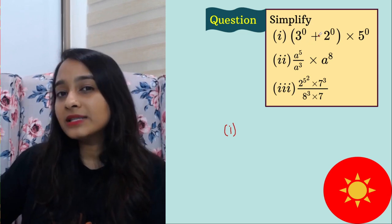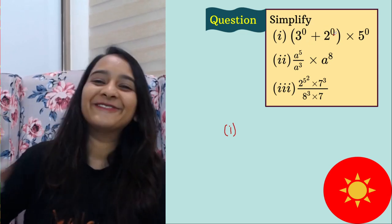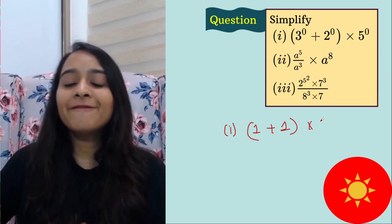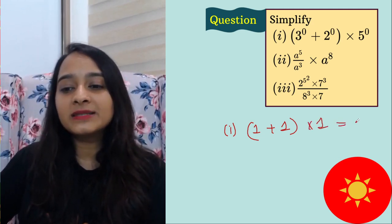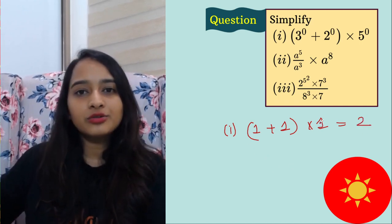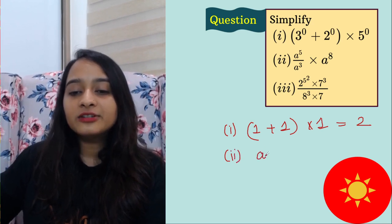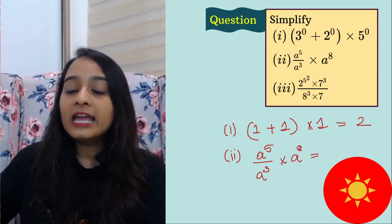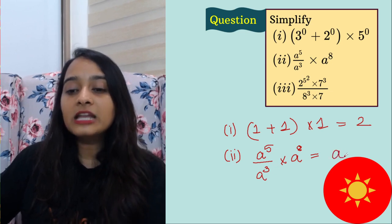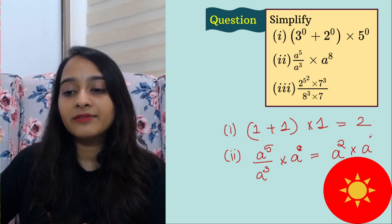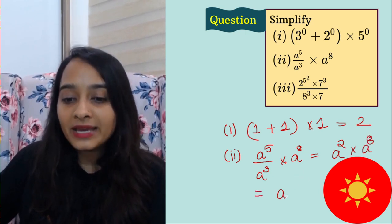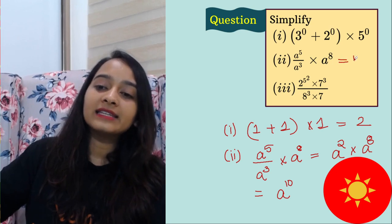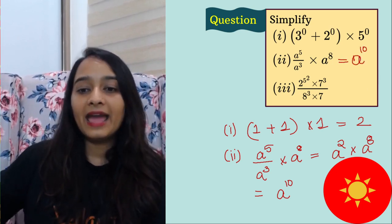Next question — simplify. First: anything to the power 0 is 1, so 3⁰ = 1, 2⁰ = 1, 5⁰ = 1. The expression becomes 2 + 2 × 1 = 2. Second: a⁵ ÷ a³ = a², then a² × a⁸ — keep the base and add exponents — giving a^10.